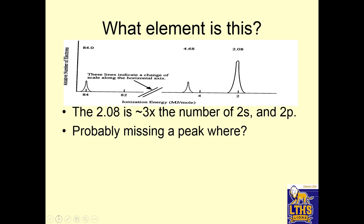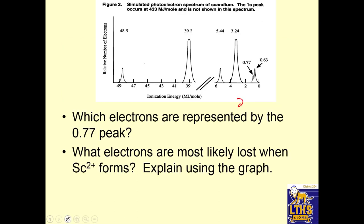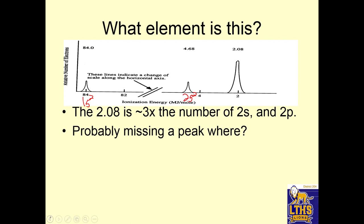So what element is this? Let's take a look. Notice this is the highest energy, so this is going to be your 1s. After 1s comes 2s, notice they're the same height, so this means there's two electrons here, two electrons here, and this one's got to be 2p. And let's see here. So 2.08 is about three times the number of 2s and 2p. So that means this would have three times as much, so it's 2p6.